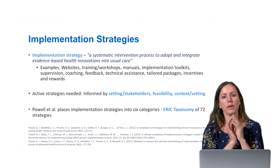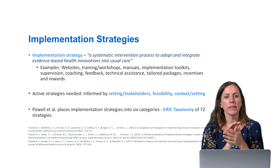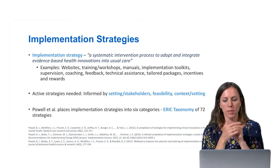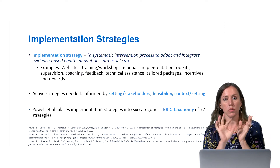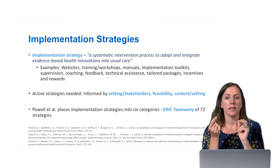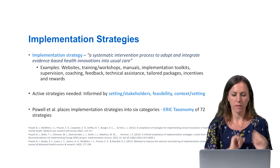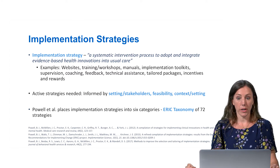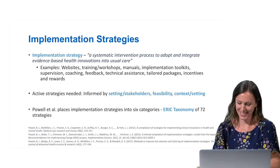The key distinction is that this is something done actively, and you're really trying to understand which strategy or combination of strategies works in a specific setting or context. This is often informed by your stakeholders, what's feasible, and the specific context and setting. Byron Powell and colleagues have put implementation strategies into six categories — this is called the ERIC taxonomy — and there are 72 strategies in total.